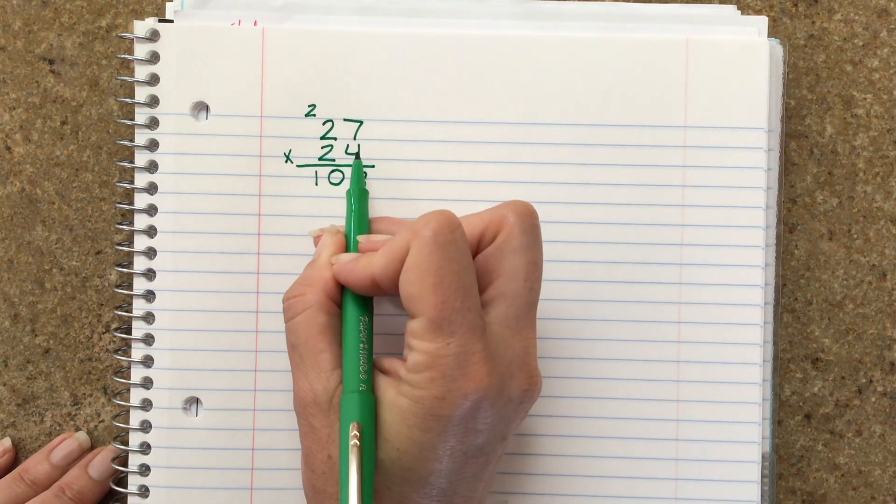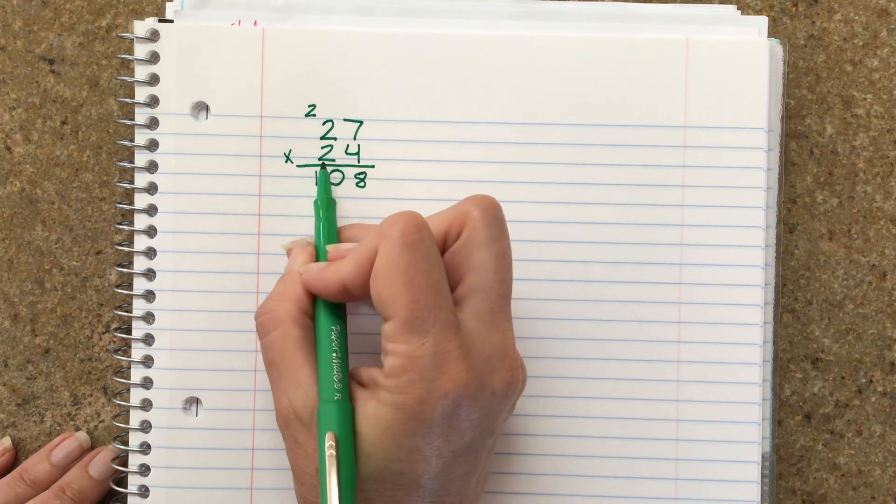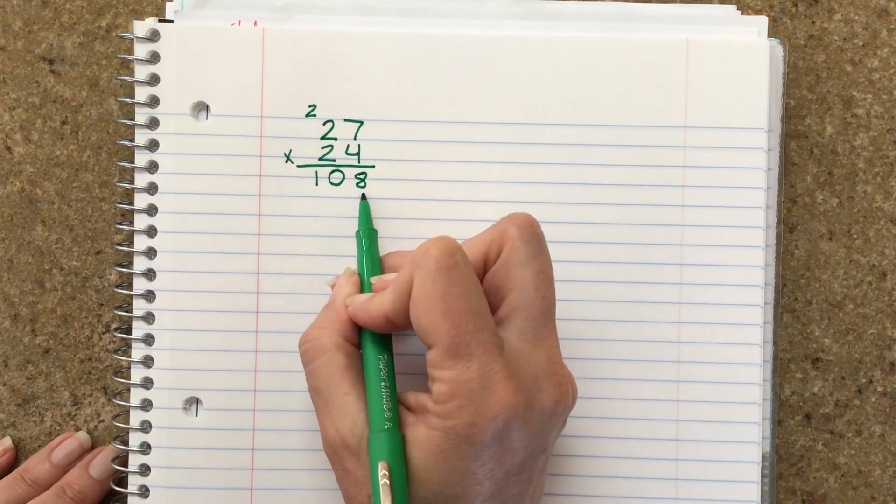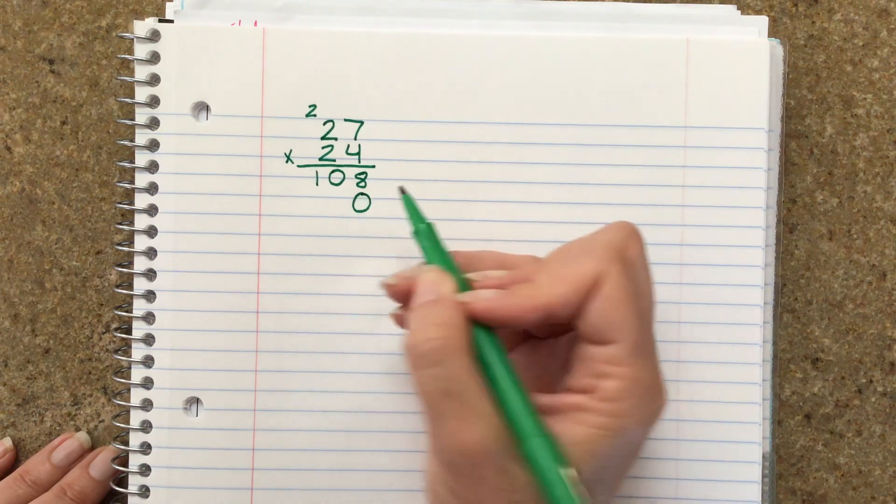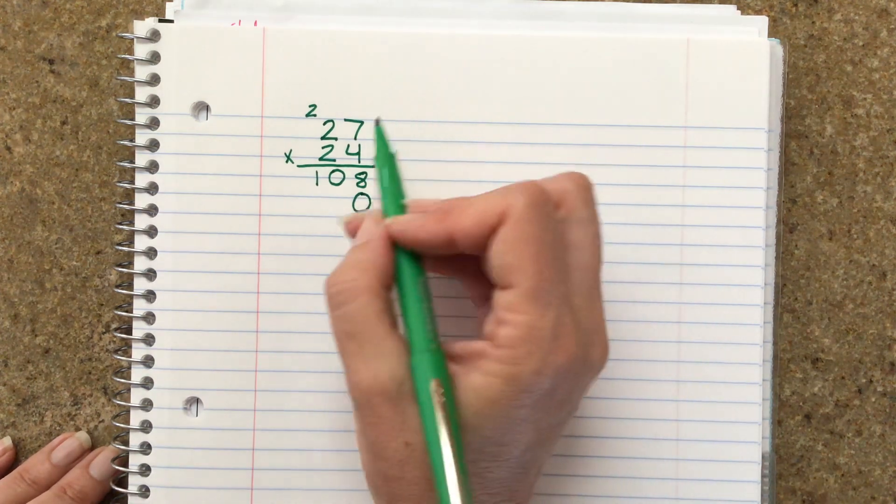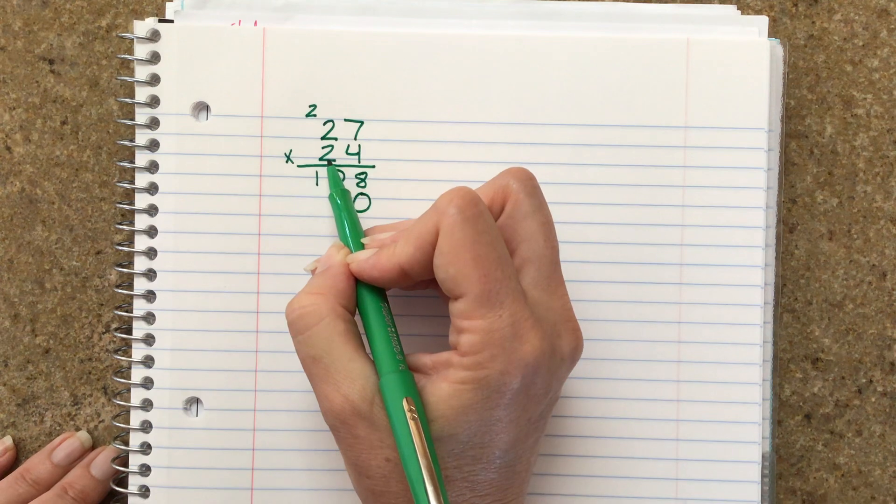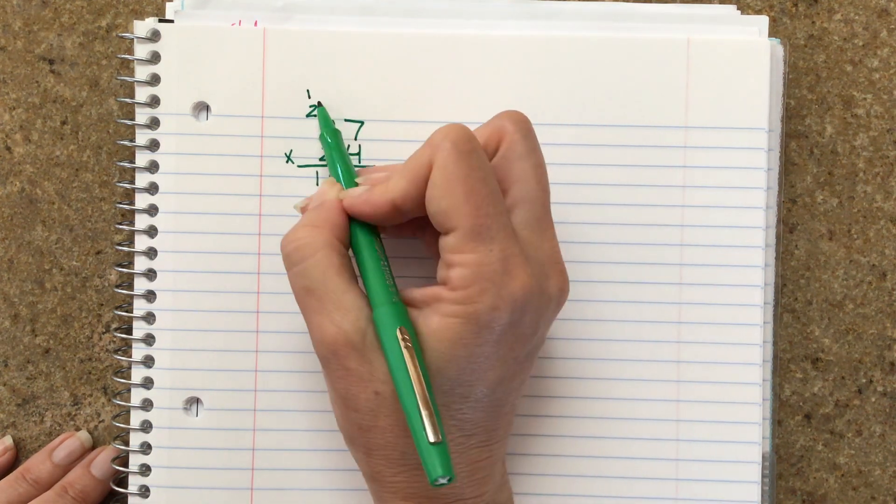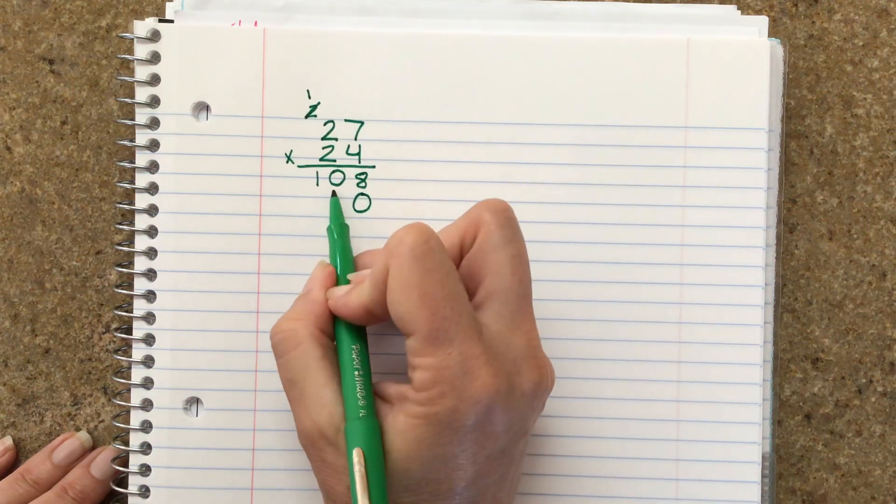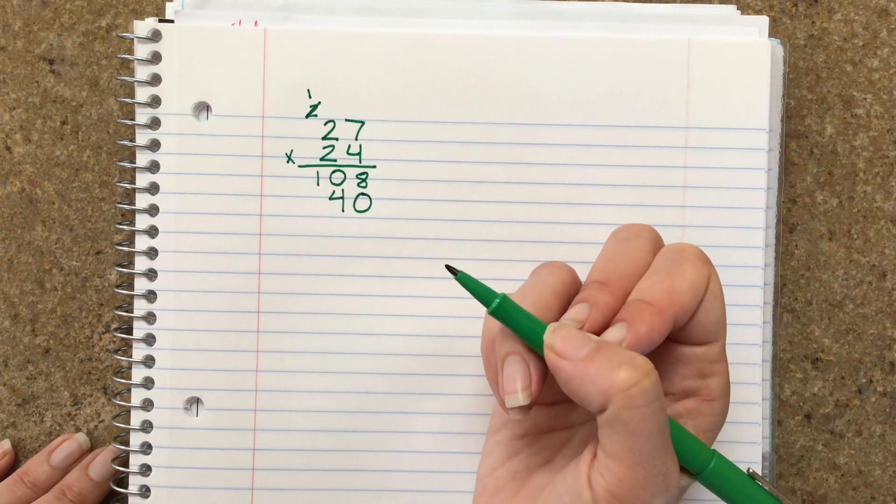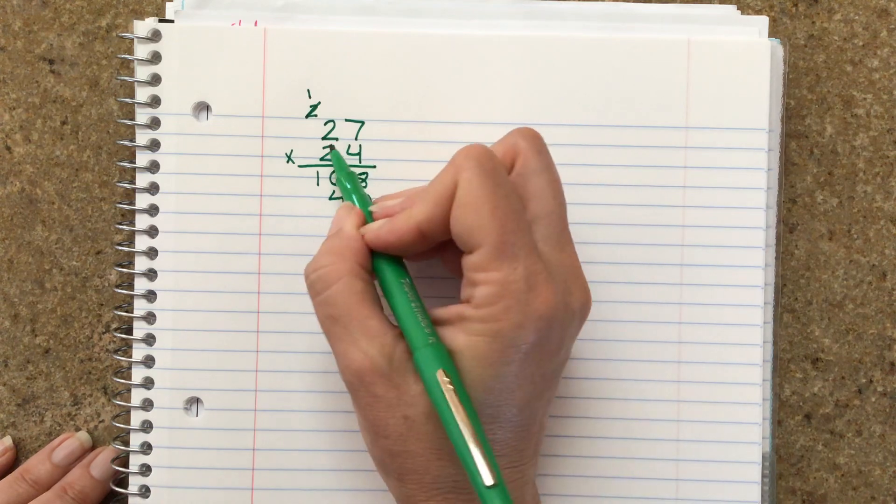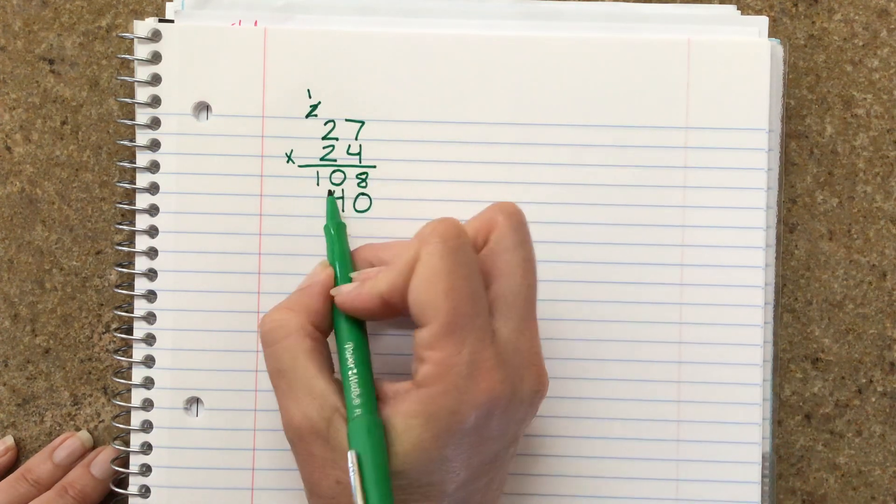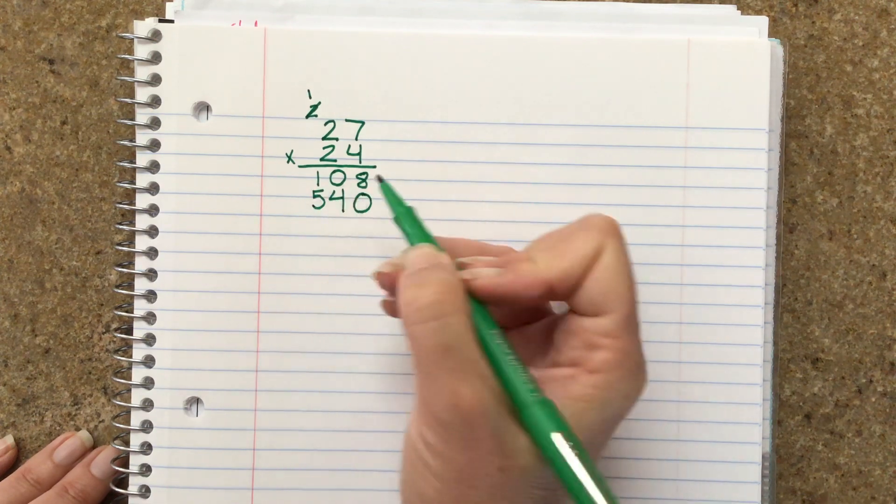Now we've only used this 4 here, so now we need to use this 2, which really is a 20. So we were told to just put a 0 there. Then you would say 7 times 2 is 14. So I'm going to put the 1 up here. I'm going to cross out that 2 and put the 4 there for 14. Then I say 2 times 2 is 4 plus 1 is 5. That's going to go there for 540.